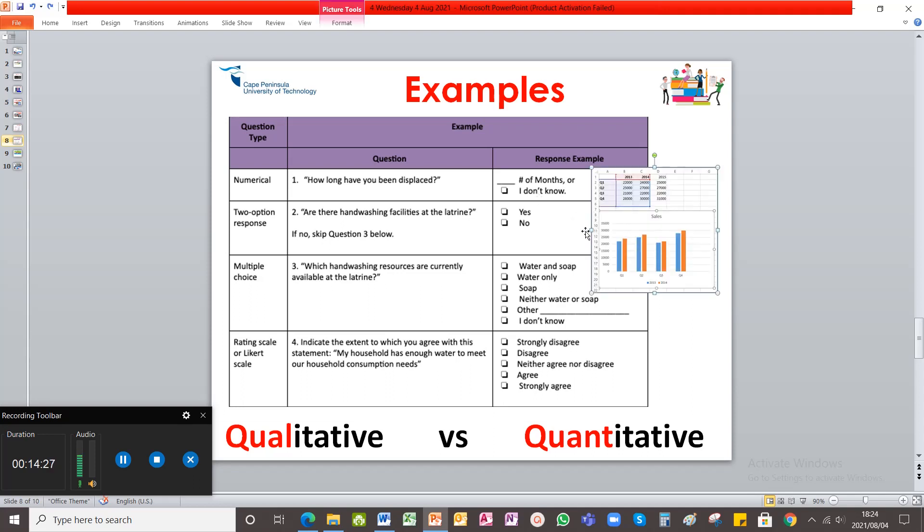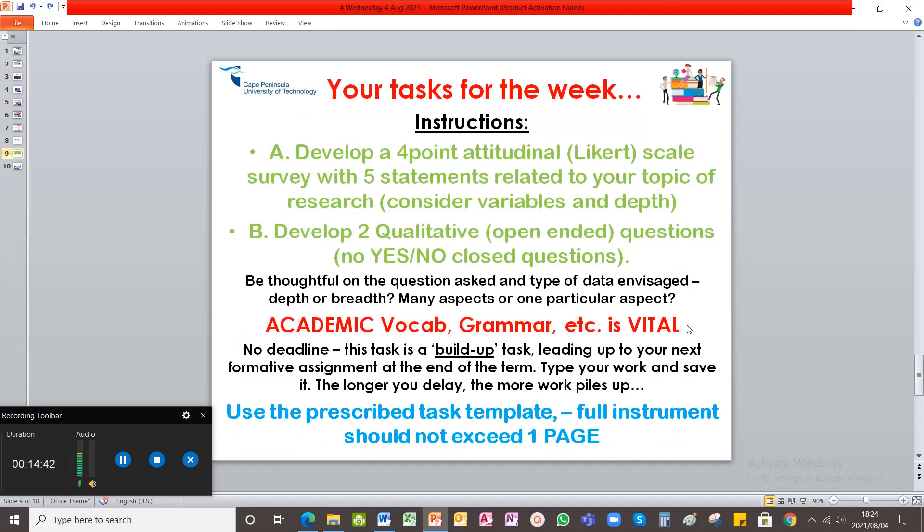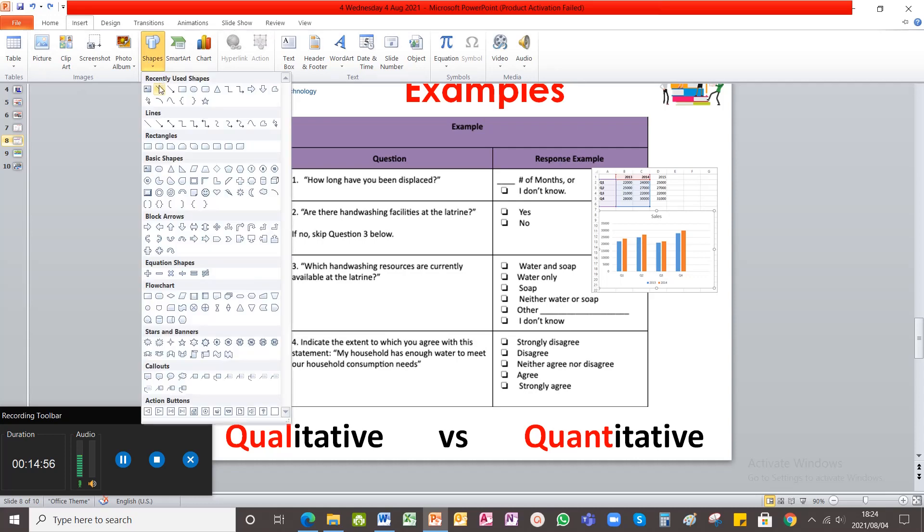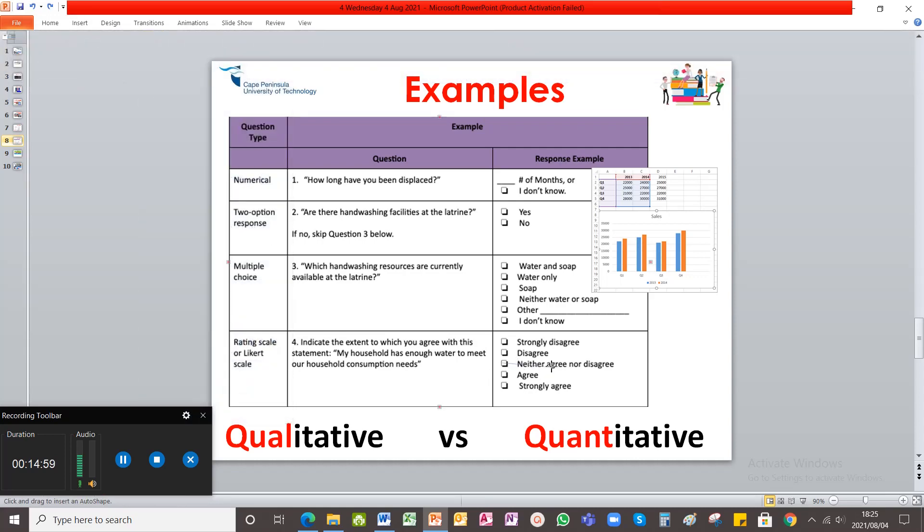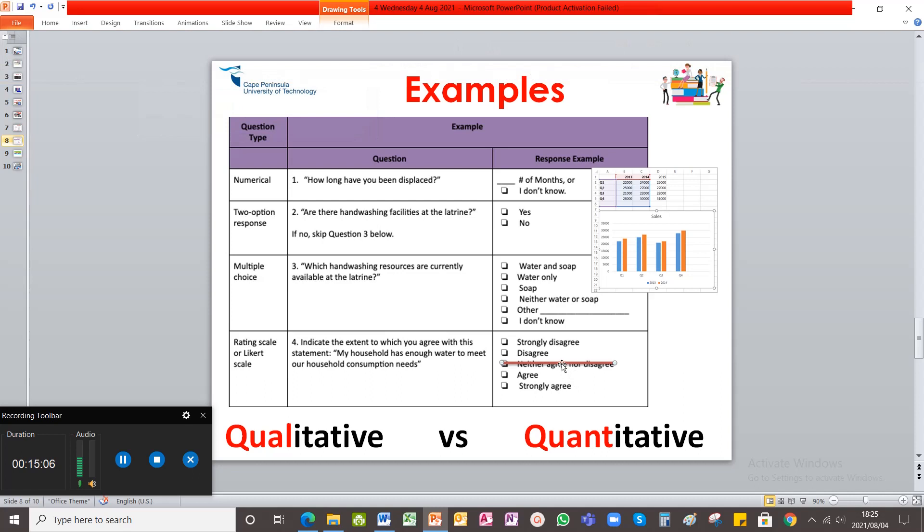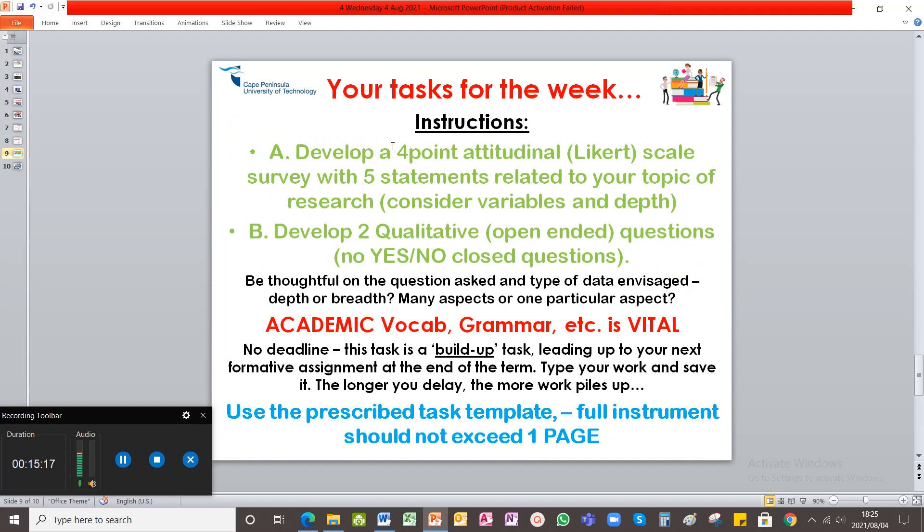It's not jumping ahead. So your task for this week, you have to develop a four point Likert scale. So remember this one has five points. You are not going to include a neutral. It will either be strongly agree or agree, disagree or strongly disagree. That's a four point Likert scale.